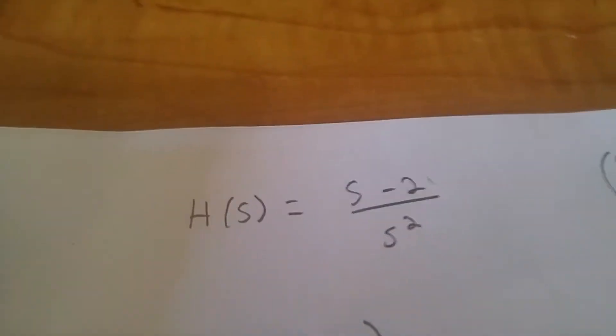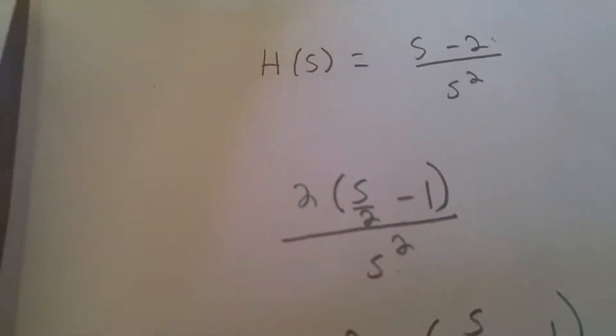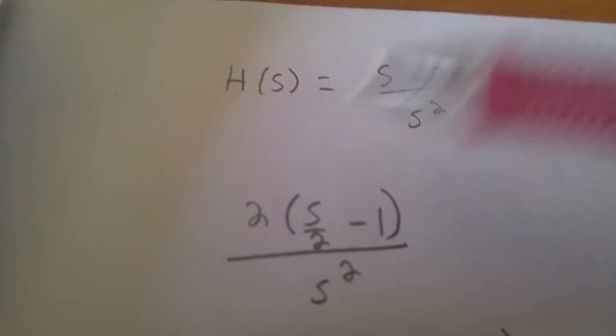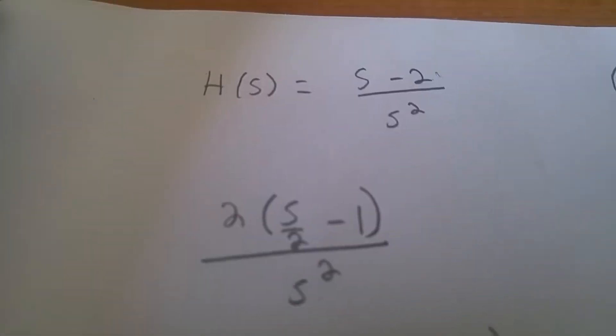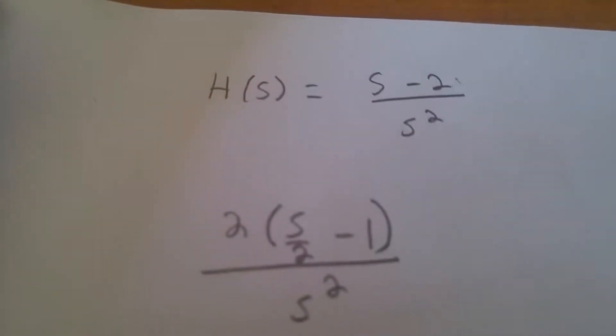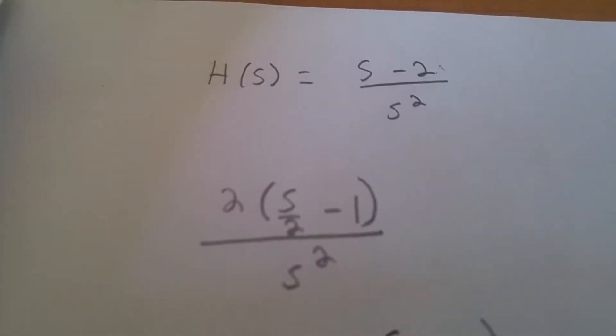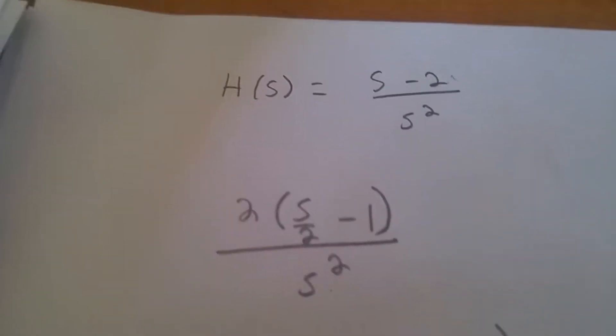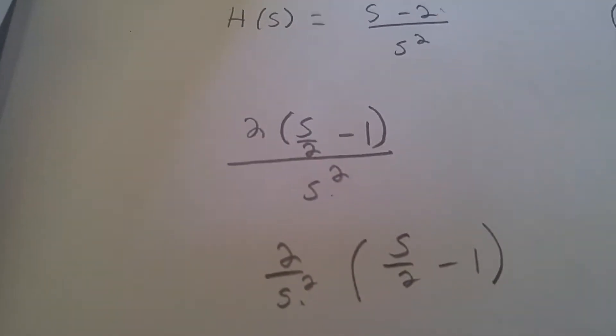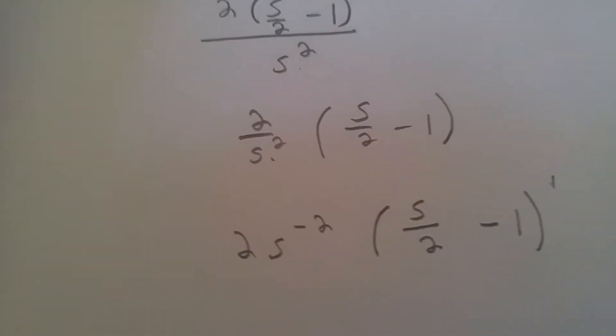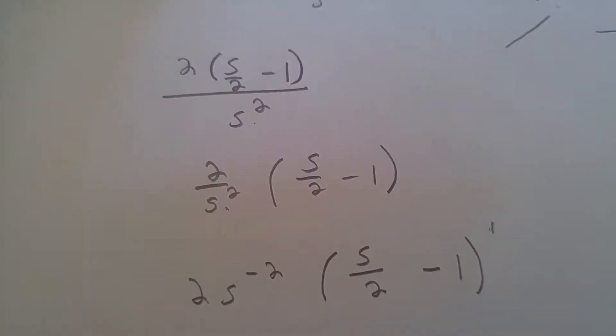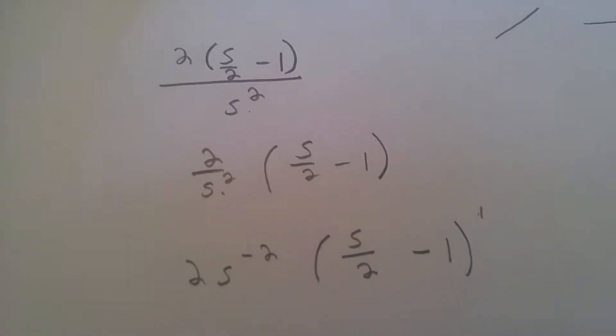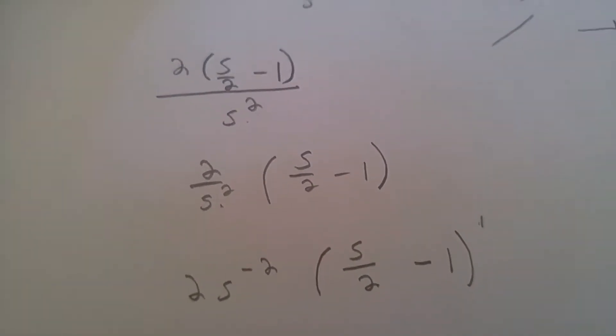So, first I want to factor out the constant. When I factor out the constant, I take the two out and I get two parentheses s over two minus one divided by s squared. That's closer to the form that we want, but not quite. Since there's an s squared in the denominator, I can bring it to the top by making it negative. When I do that, I get two s to the negative two times s over two minus one. This is the form that I need in order to graph the Bode diagram.